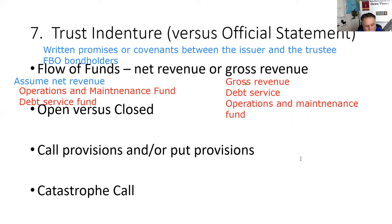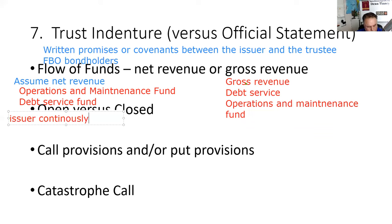Open versus closed — be careful, these words mean different things in different contexts. In mutual funds or mortgage bonds it means something different. Here in munis, open-end bonds like San Francisco airport means the issuer can continually sell new bonds, as long as they meet the additional bonds test.